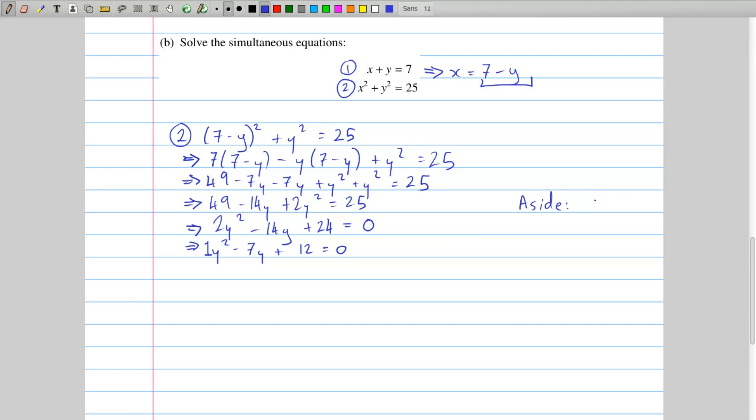I take the coefficient of y squared, which is the 1, and the constant, which is the 12, and I multiply them together. And I get a 12. Now I'm looking for all the factor pairs of 12. So I go 1 and 12, 2 and 6, 3 and 4. And there's also the minus pairs, so minus 1, minus 12, minus 2, minus 6, and minus 3, minus 4.